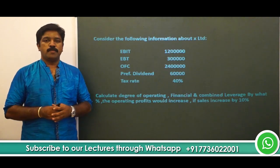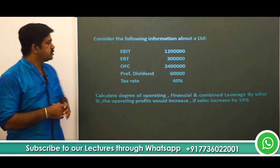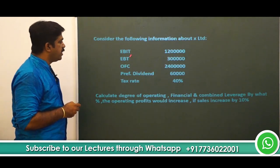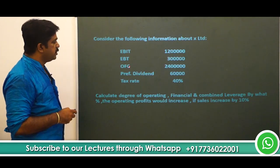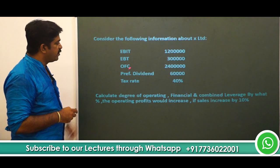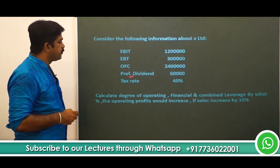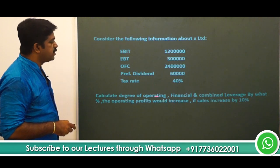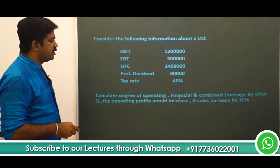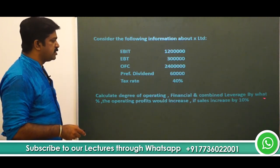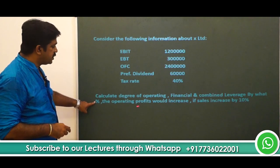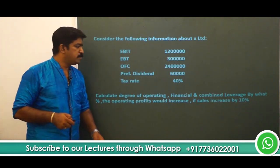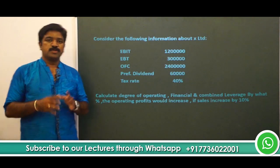Let's move on to another problem in leverages. Consider the following information about X Limited. You have EBIT, EBT, Operating Fixed Cost (OFC), Preference Dividend, and Tax Rate. You have to calculate the degree of operating leverage, financial leverage, and combined leverage. Then, by what percentage would the operating profits increase if sales increases by 10%?